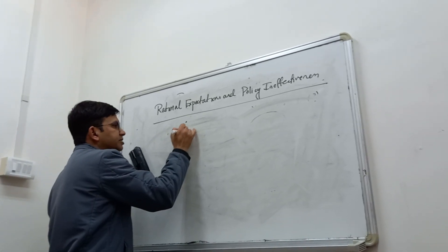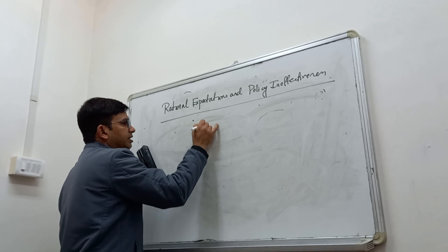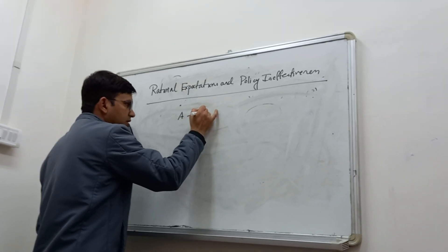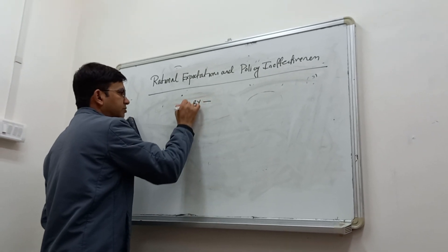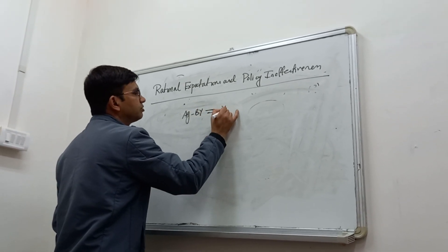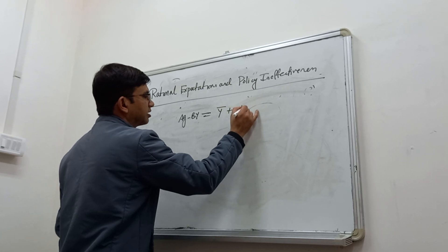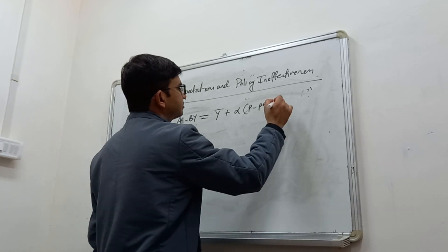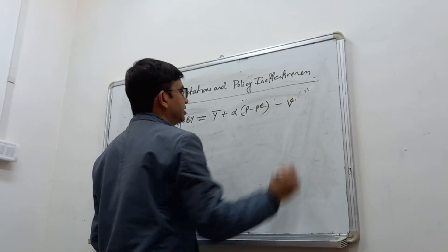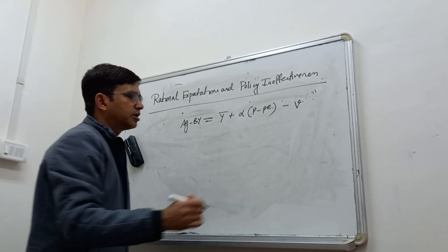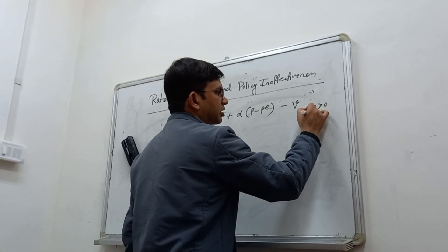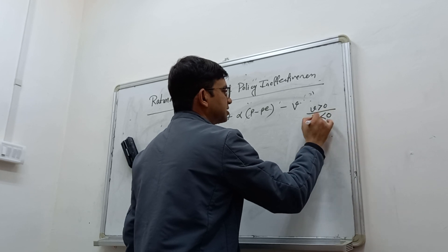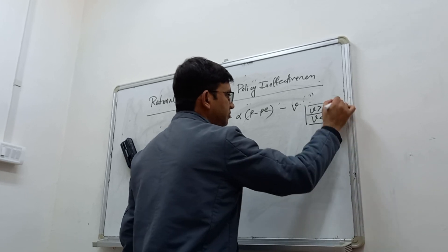We can write: AG − BY = Ȳ + α(P − PE) − A. Now we introduce V, the random supply shock variable. V is greater than zero for a negative supply shock and V is less than zero for a positive supply shock.